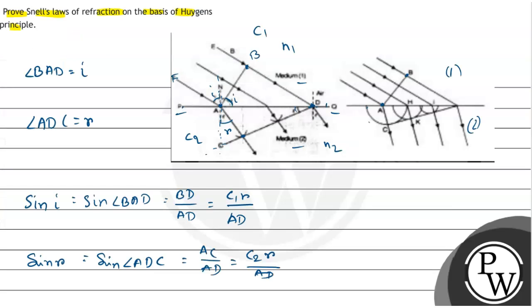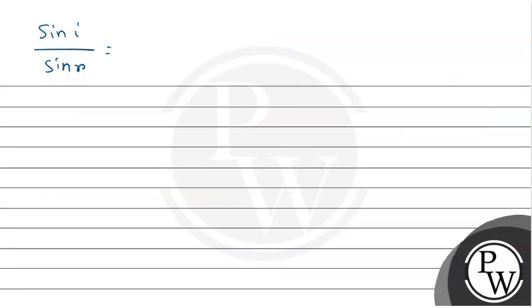Let us see sin I divided by sin R. That will be C1T divided by AD divided by C2T by AD, which gives us C1 by C2. This constant is called the refractive index.